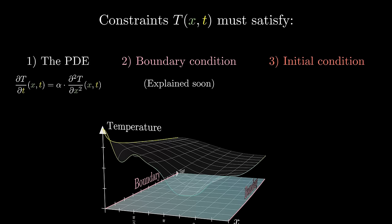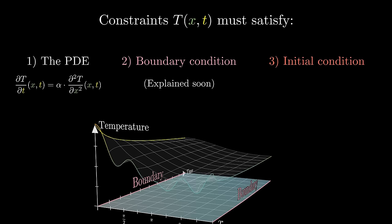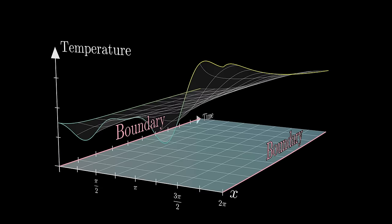These added constraints are really where all of the challenge actually lies. There is a vast ocean of functions solving the PDE, in the sense that when you take their partial derivatives, the thing is going to be equal. And a sizable subset of that ocean satisfies the right boundary conditions.